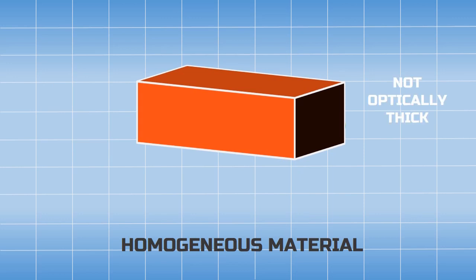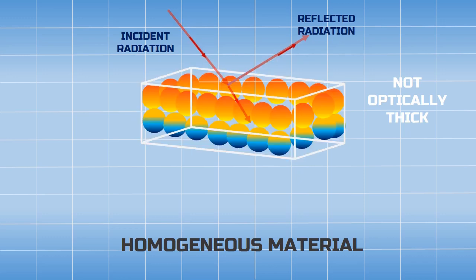On the other hand, if the material is not optically thick enough to absorb all the radiation, a significant fraction of it would be transmitted through the body.